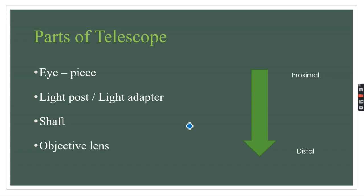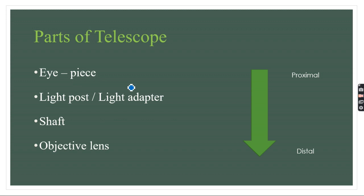There are four important parts of the telescope, going from the proximal end to the distal end. The distal end is the portion that goes inside the abdomen or thoracic cavity, while the proximal end lies outside. Traveling from proximal to distal: the first part is the eyepiece, then just distal to that is the light post or light adapter, followed by the shaft — a long rod-like structure — and finally at the distal end, inside the shaft, there are various objective lenses.